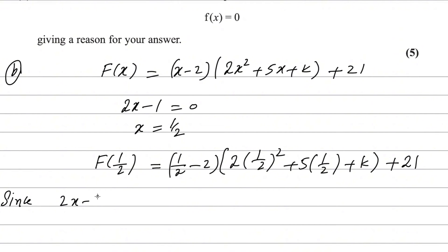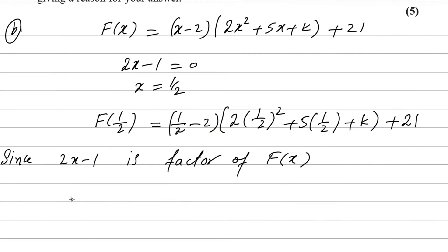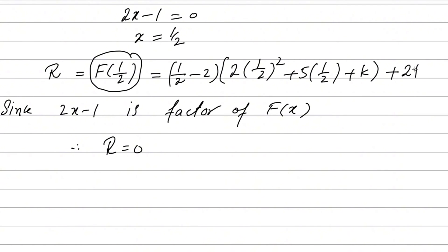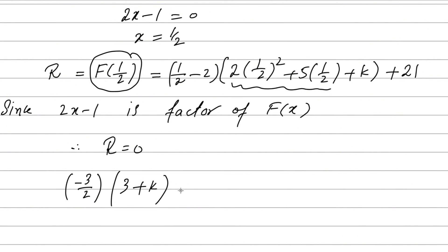Since (2x minus 1) is a factor of f(x), the remainder equals 0. So replace the remainder with 0 and simplify the right-hand side. (1/2 minus 2) gives minus 3/2. Using a calculator, you get: (minus 3/2)(3 plus k) plus 21 equals 0.